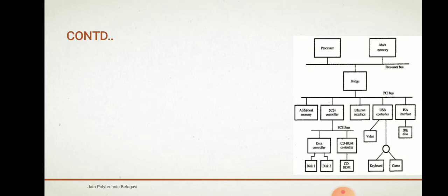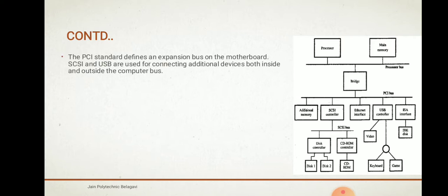Here you can see there is a bridge used to interpret the protocols from one bus to another. There is a processor bus — as mentioned, it is defined as a signal generator on the processor chip. The PCI standard defines an expansion bus on the motherboard. When you go to the PCI bus, it has the expansion bus on the motherboard.